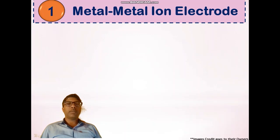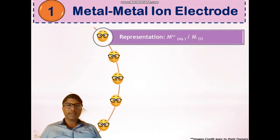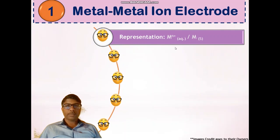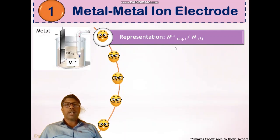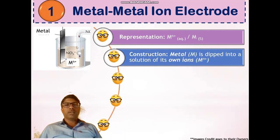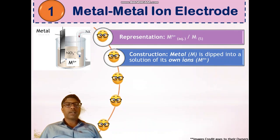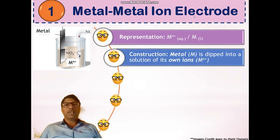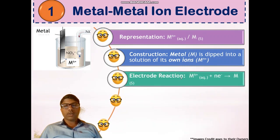Let's see the first type of electrode: metal-metal ion electrode. It is represented as M^n+ (aqueous) / M (solid). Here M^n+ is the metal ion and M is the metal. To construct a metal-metal ion electrode, we require one beaker, the metal, and a solution containing M^n+ ions. When we dip the metal into the solution of M^n+ ions, the metal-metal ion electrode is formed and the electrode reaction takes place.